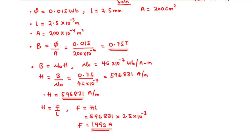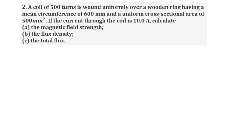Now let's move on to Example 2. A coil of 500 turns is wound uniformly over a wooden ring having a mean circumference of 600 mm and a uniform cross-sectional area of 500 mm². If the current through the coil is 10 amperes, calculate: A) the magnetic field strength, B) the flux density, and C) the total flux.